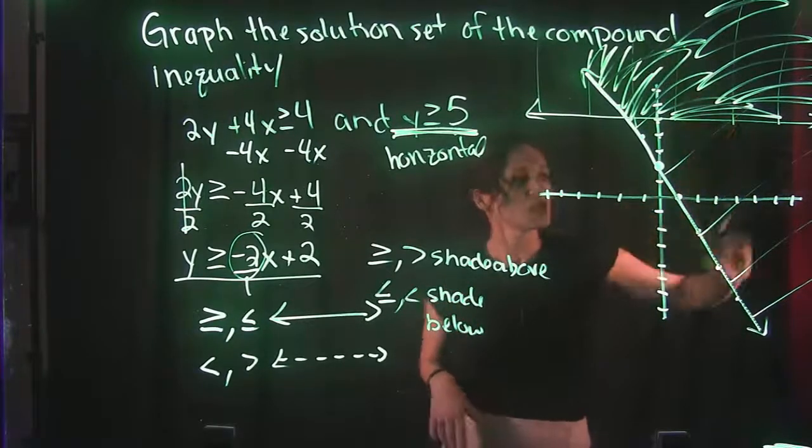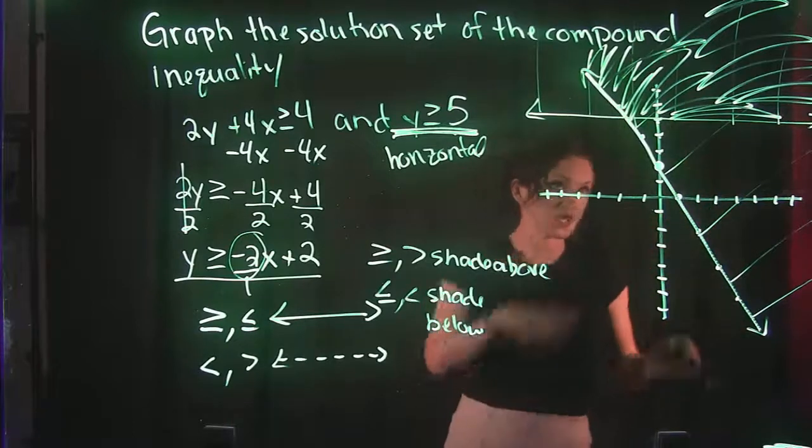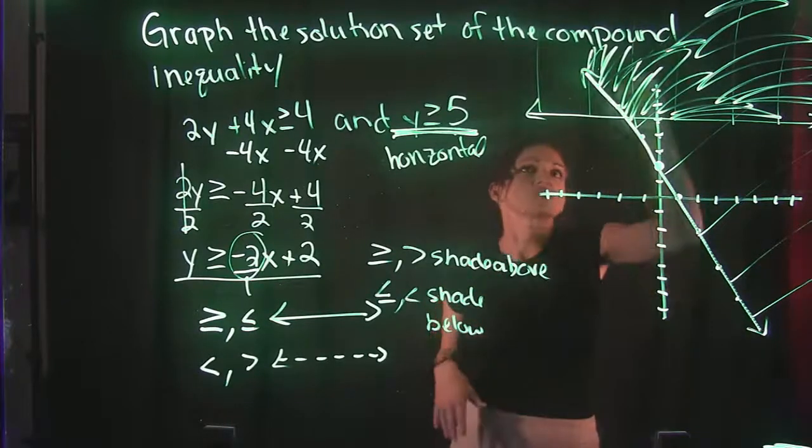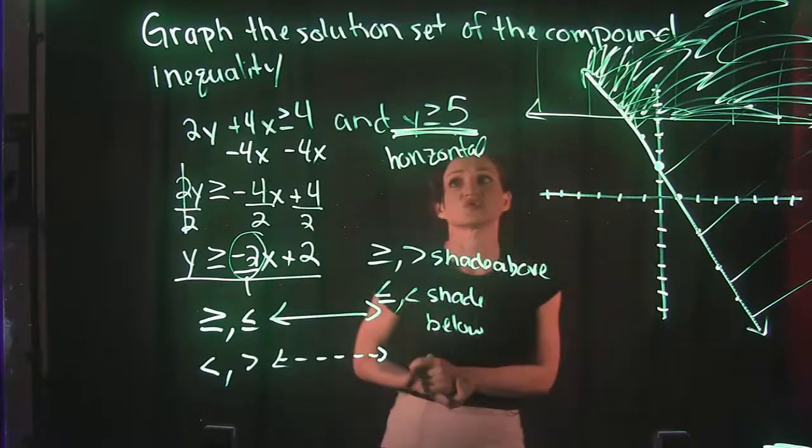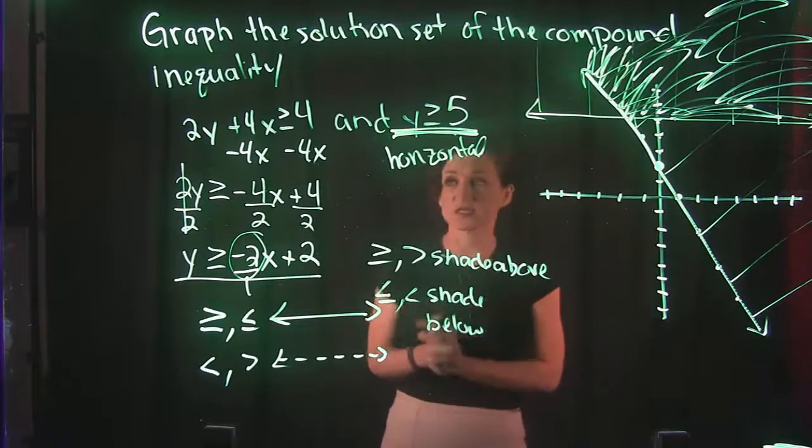Because over here only this line is shaded, not the other one. So it has to be this little section right over here, that top right corner of it. That is what your solution would look like to this problem.